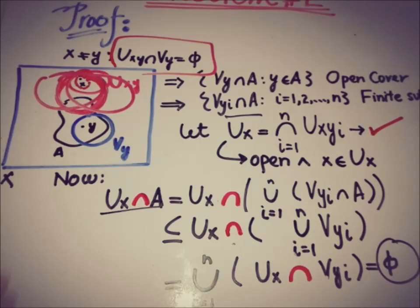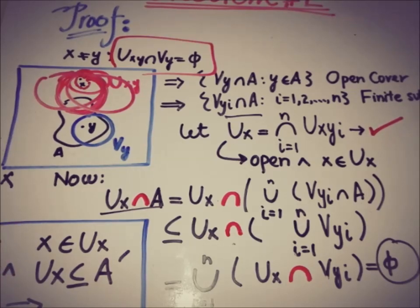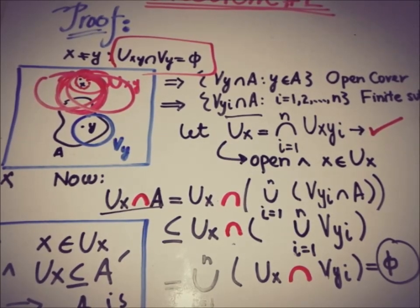Since U_x ∩ A = ∅, it follows that x is in A-complement and U_x is a subset of A-complement. U_x is an open set containing x, so this implies that A-complement is open, and therefore A is a closed subset of the T2 space.